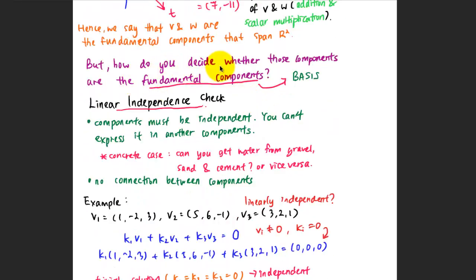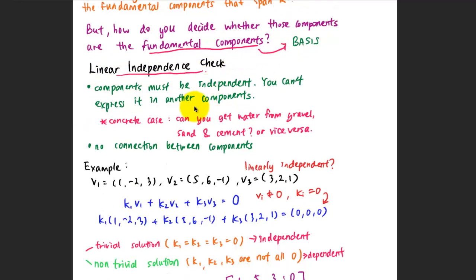How do you decide whether the given components are the fundamental components or not? In this context, we call the fundamental components as bases — or basis for a singular component. In order to know whether the given components are the bases for a system, we have to conduct the linear independence check. For any given components to be bases, they must be independent from each other, meaning you can't express one in terms of the others.